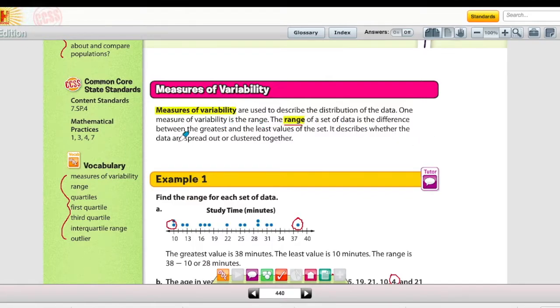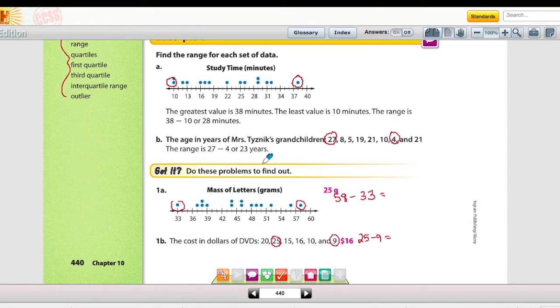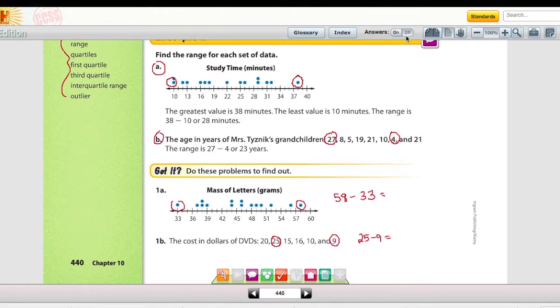And this just tells us how far the data are spread out or clustered together. In Example 1, you're shown that you can be given data in a graph form or just numerically. In either case, you're going to be identifying the largest value and the smallest value and then subtracting. So for Got It 1a at the bottom of page 440, the smallest value on our chart here is 33, our largest is 58, and 58 minus 33 is 25.